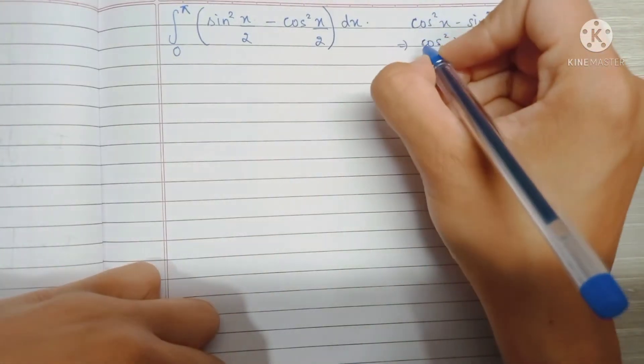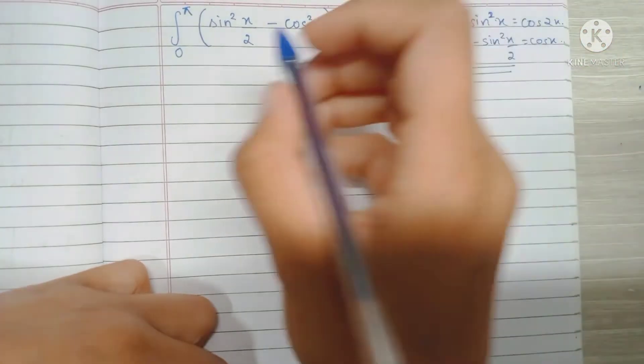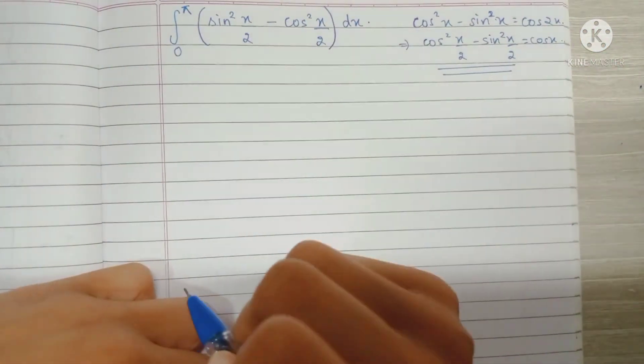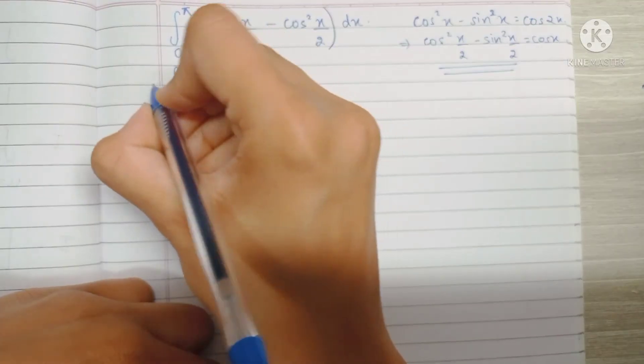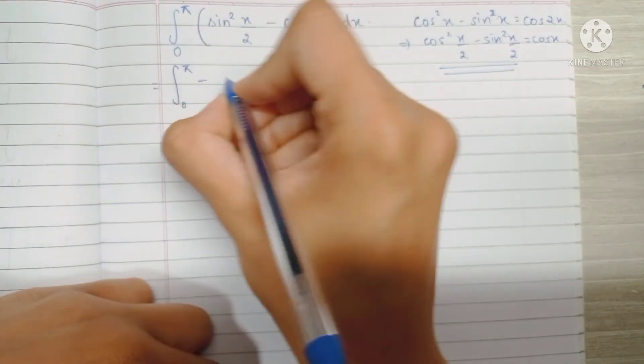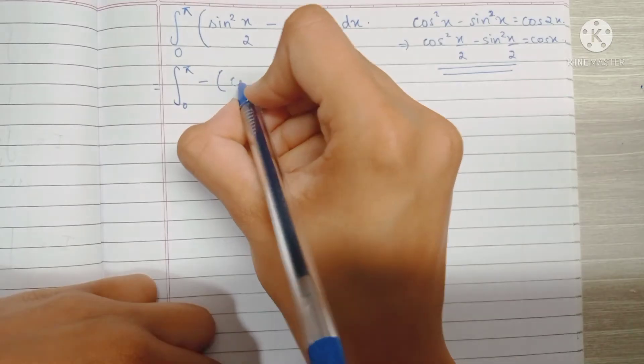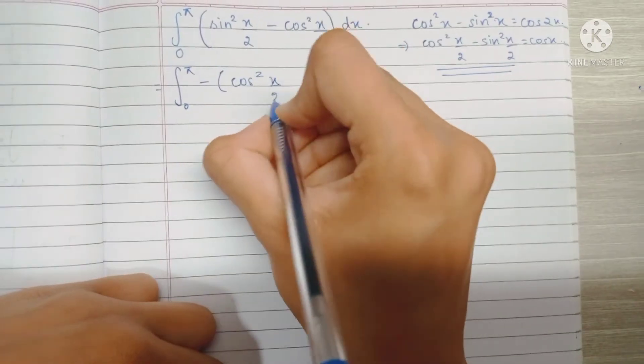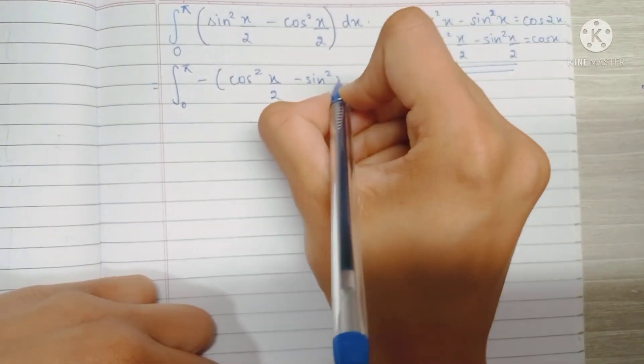This is what we're going to be using. I'm going to take the minus sign outside the bracket, which means that inside the bracket I will have cos squared x by 2 minus sine squared x by 2.